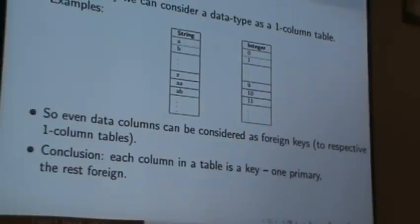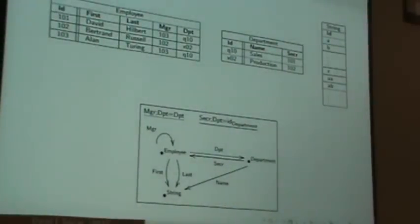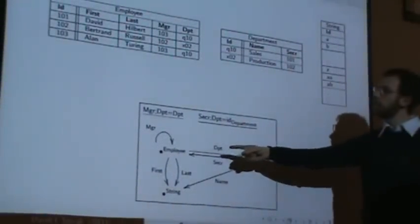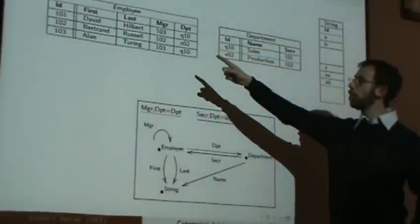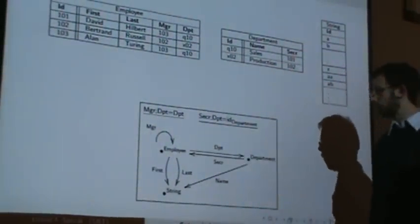So the conclusion is that every column in a table could be considered a key - one primary and the rest foreign. And so the picture of this that we would see here is imagine that every column is an arrow in this graph.